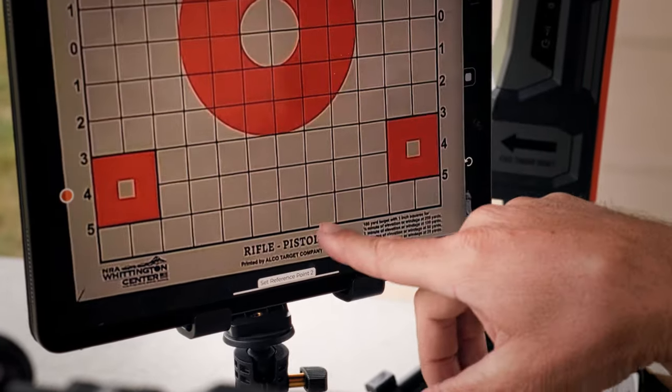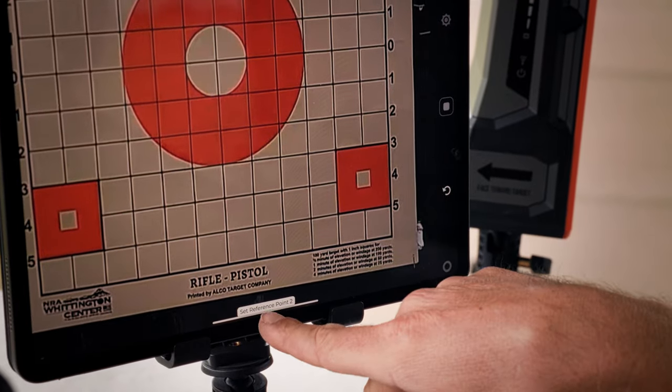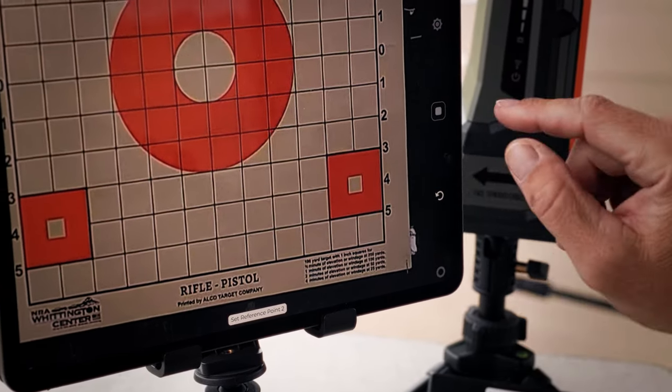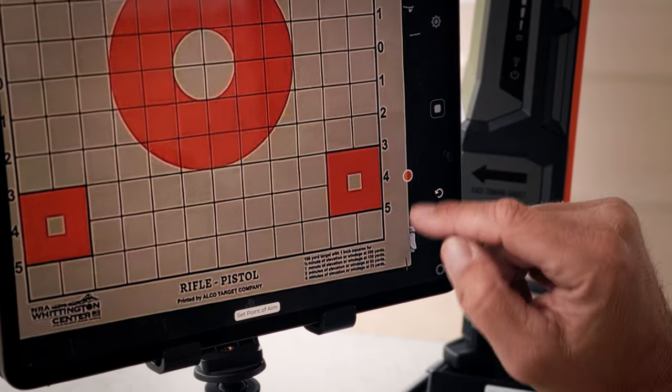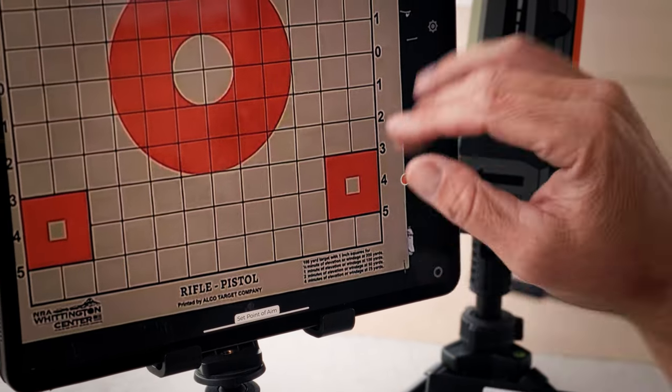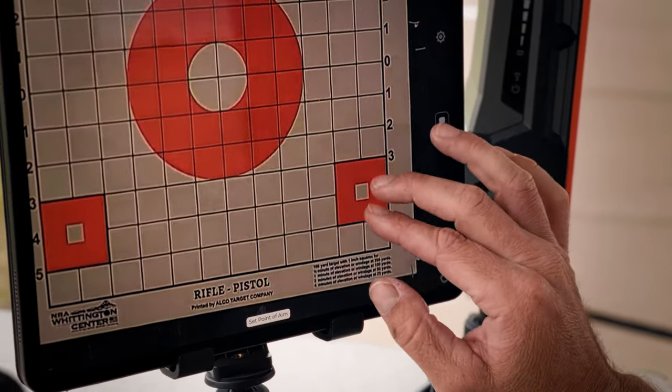We're going to tap the left hand side of whatever we're measuring. Then if you look back, reference point two, it wants to know the other side. So we're going to simply tap the right side of that.